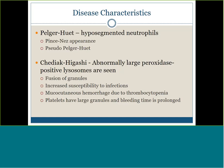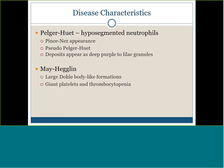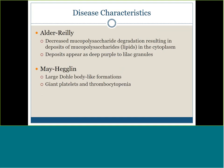Chédiak-Higashi is when granules inside neutrophils fuse together; they're peroxidase-positive lysosomes. As a result, neutrophils don't function well, leading to increased susceptibility to bacterial infection. Alder-Reilly is when mucopolysaccharides aren't broken down and build up in the cytoplasm — they look like very large, numerous purple-to-lilac granules, similar to toxic granulation but different. May-Hegglin anomaly is a triad: Döhle body-like inclusions in the cytoplasm, giant platelets, and thrombocytopenia.